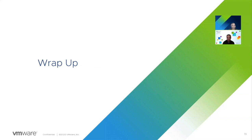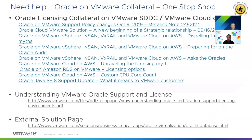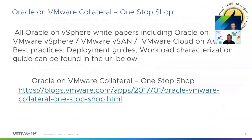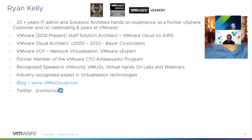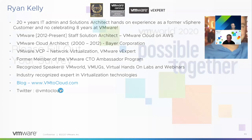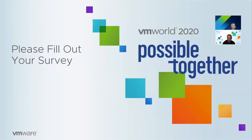To wrap up: this session provided numerous links covering running Oracle workloads on a VMware platform, understanding VMware Oracle support and licensing, and the business-critical application website hosting the Oracle vertical. Everything related to running Oracle workloads on vSphere, vSAN, or VMware Cloud on AWS — best practices, deployment guides, workload characterization guides — is available at the one-stop-shop URL provided. The session is now open for questions and answers. Thank you for listening.